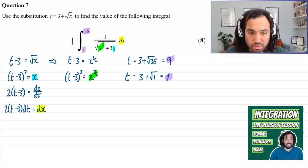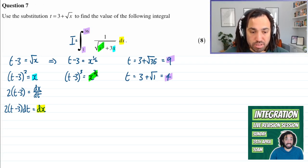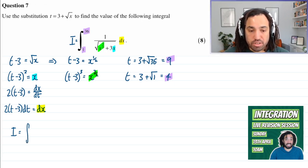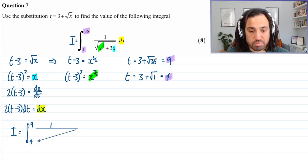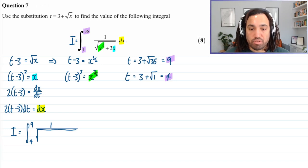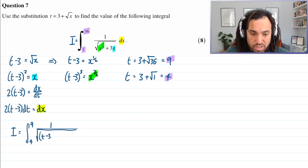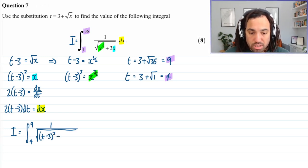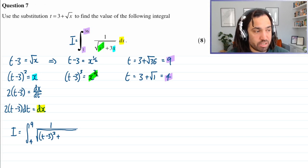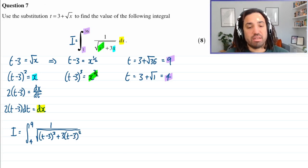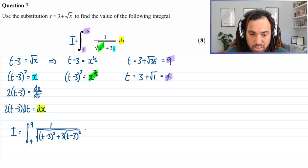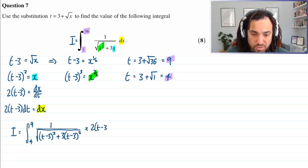So I think that's it. So I think what we can do is we can call this the integral that we're trying to transform. And the new limits are 9 and 4. We have 1 divided by the square root of the green bit, which is t minus 3 cubed, plus 3 lots of the blue bit, which is t minus 3 squared. And then we've got dx, which is the yellow bit, which is 2 lots of t minus 3 dt.